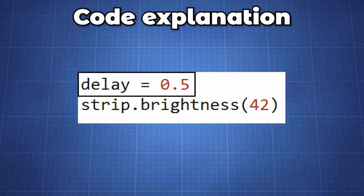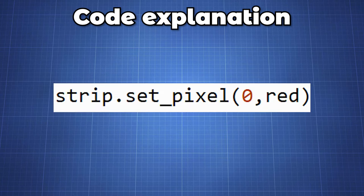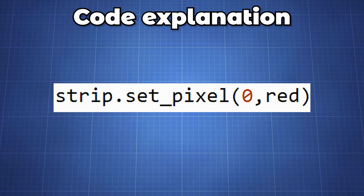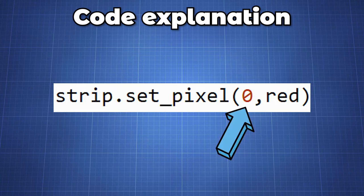We create a variable to store the delay value, half a second shown here, and using strip.brightness we can set the brightness value of our LEDs. To set a single LED we can use the strip.setPixel and pass it an LED position and color.